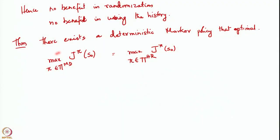Hello everyone. In the previous lecture we saw that the use of history and randomization does not help in obtaining a better reward in a Markov decision process problem. Our main result was that if you optimize the cost over all Markov deterministic policies, that is also equal to the optimal reward obtained when optimizing over all history-dependent randomized policies. These two concepts are actually equivalent.